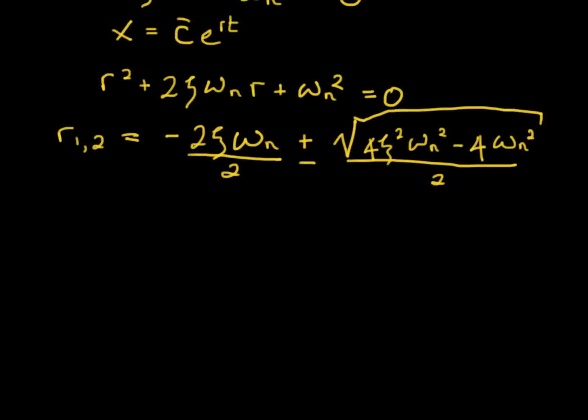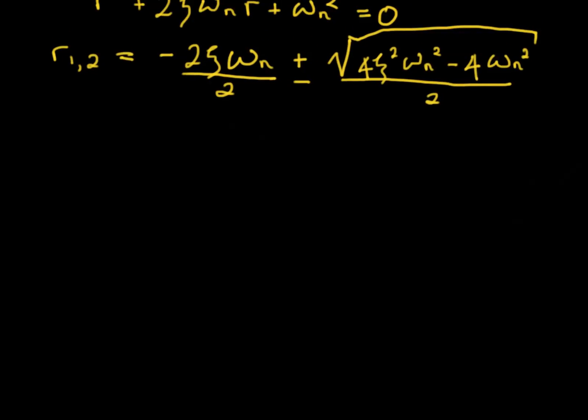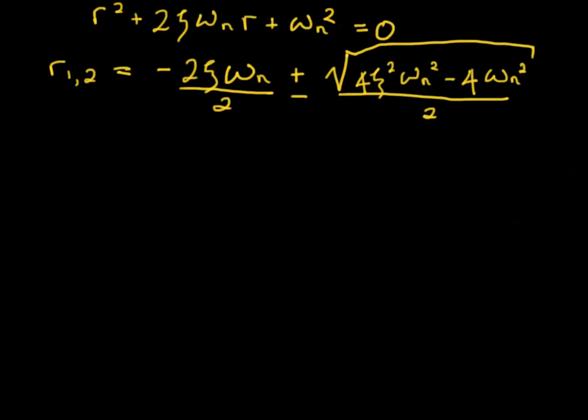Alright, let's make a little more space. Simplifying this is equal to minus zeta omega n plus or minus the square root of zeta squared minus 1 times omega n squared. We give this quantity a name.